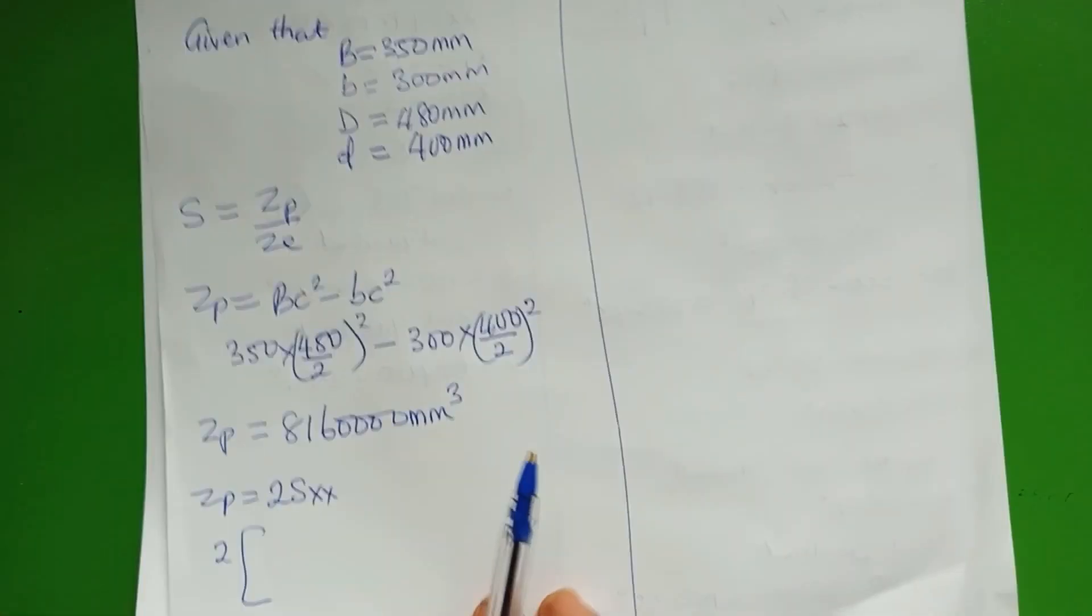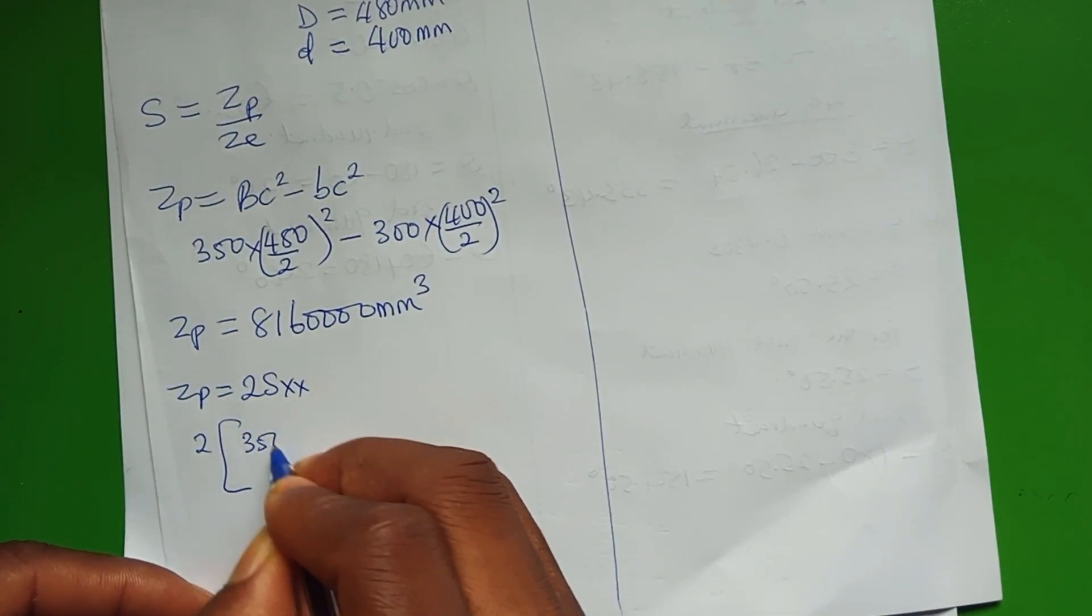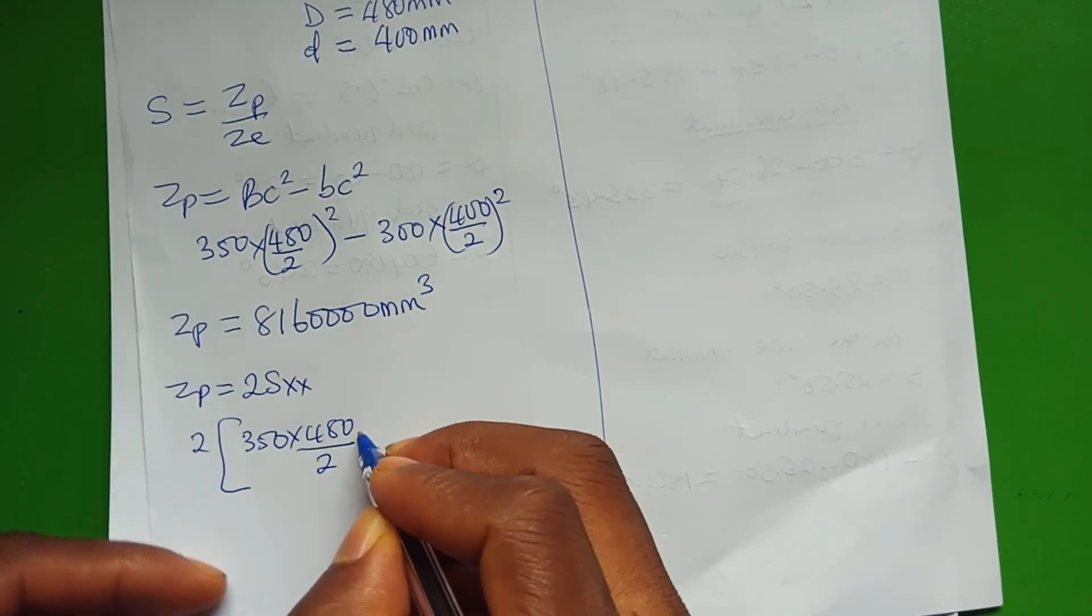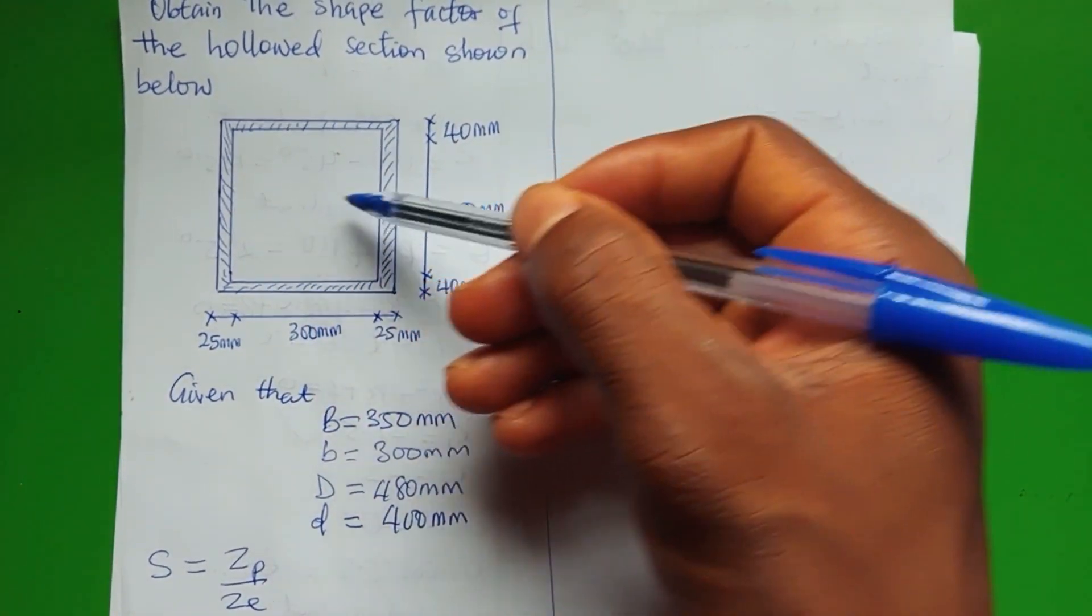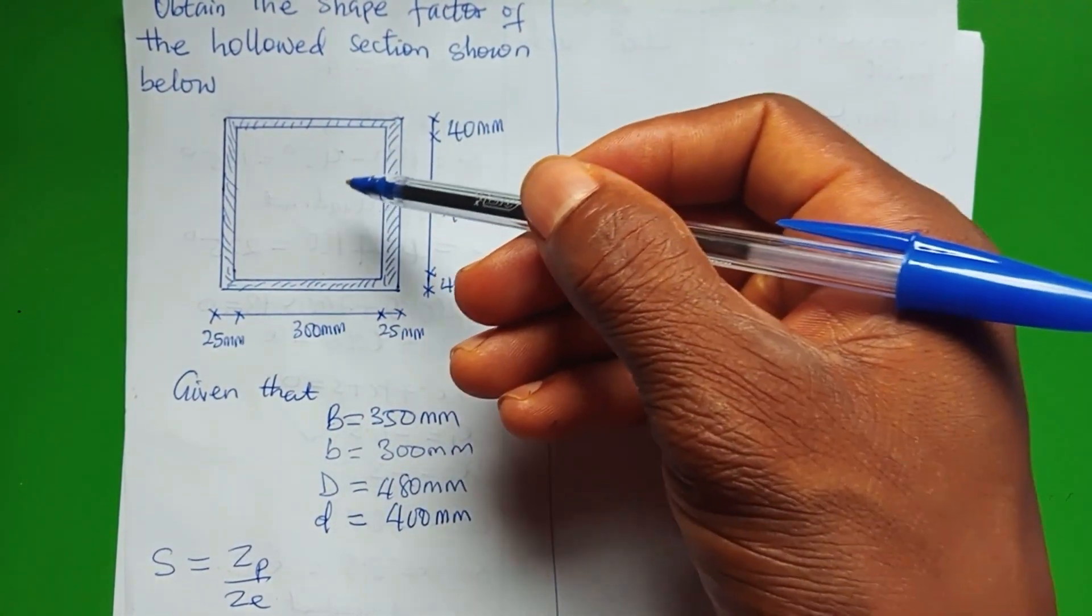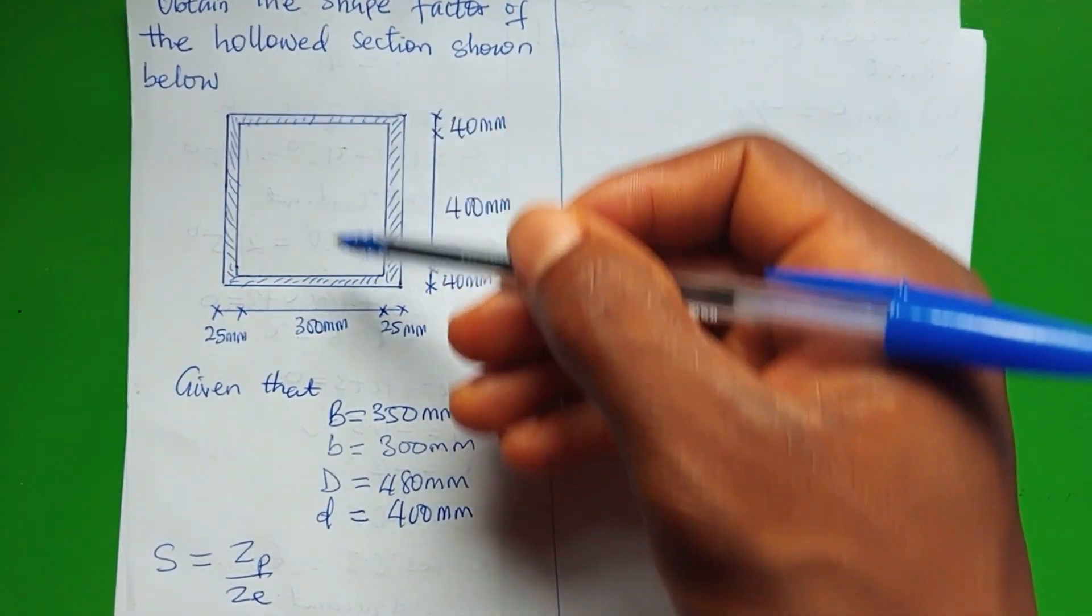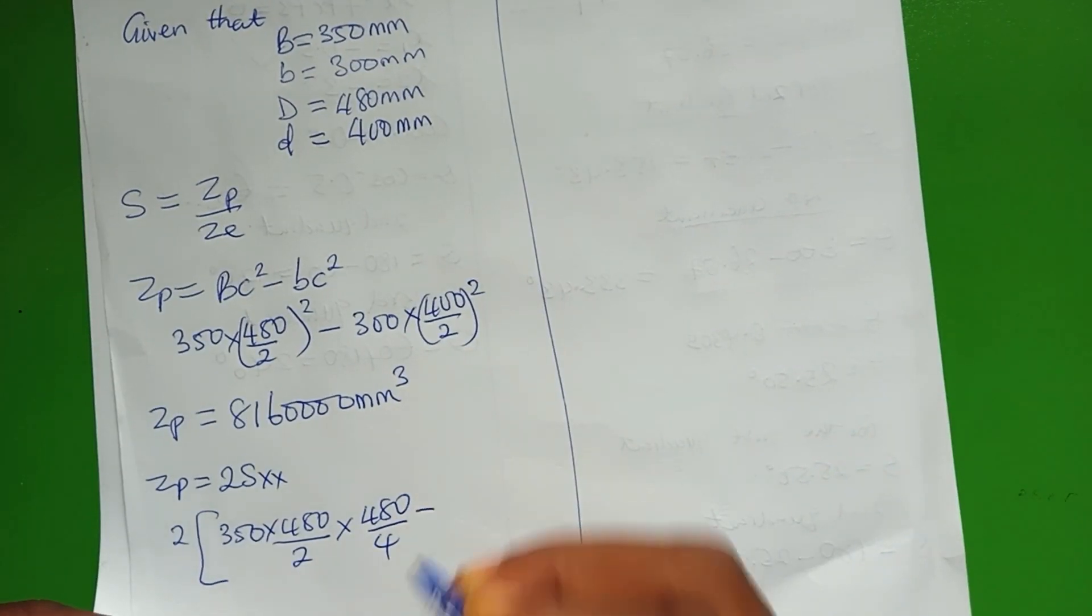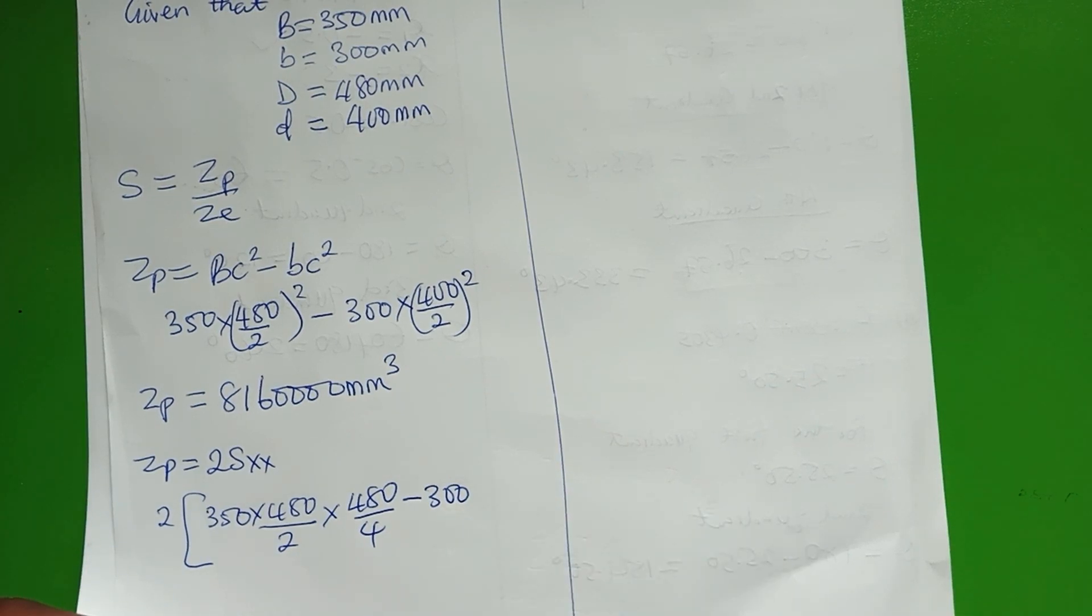It's going to be the total depth divided by 2, which gives us 350 multiplied by 480 over 2, that is the area, multiplied by the centroid. The centroid of the small rectangle is half the distance, which is 480 over 4.